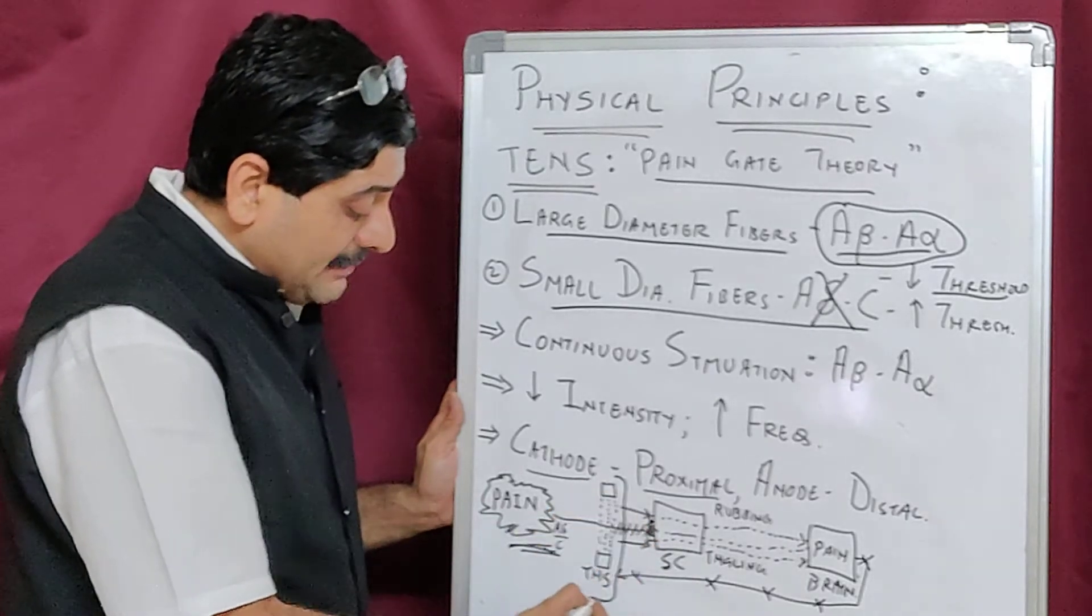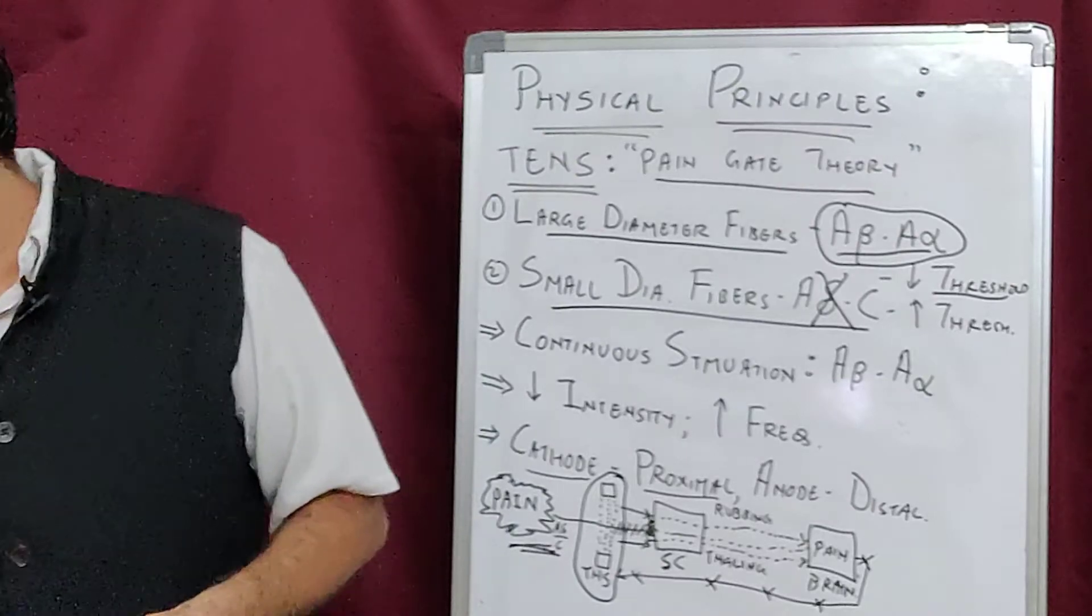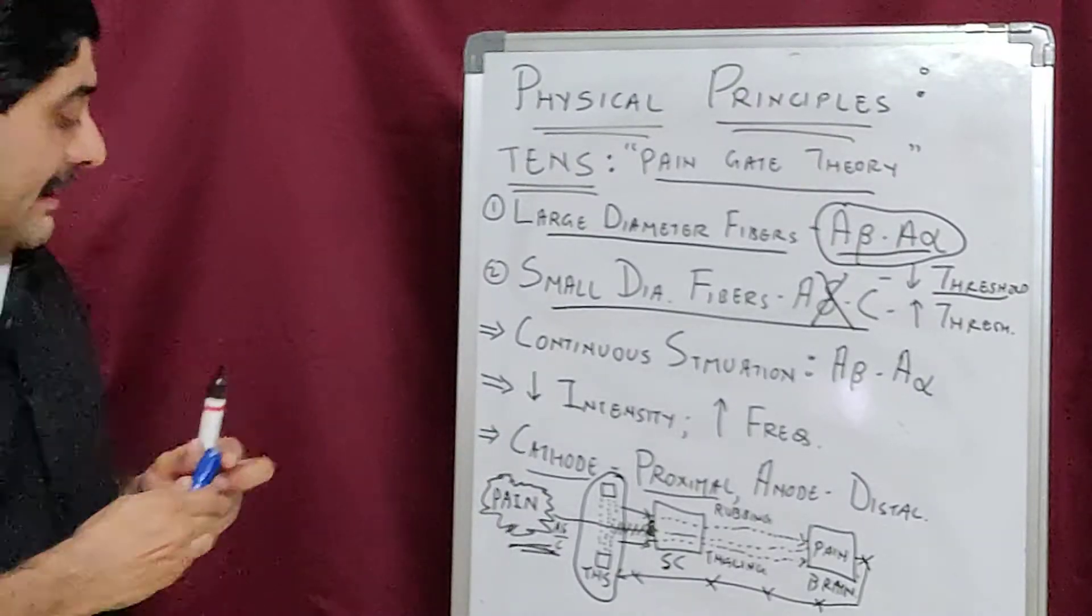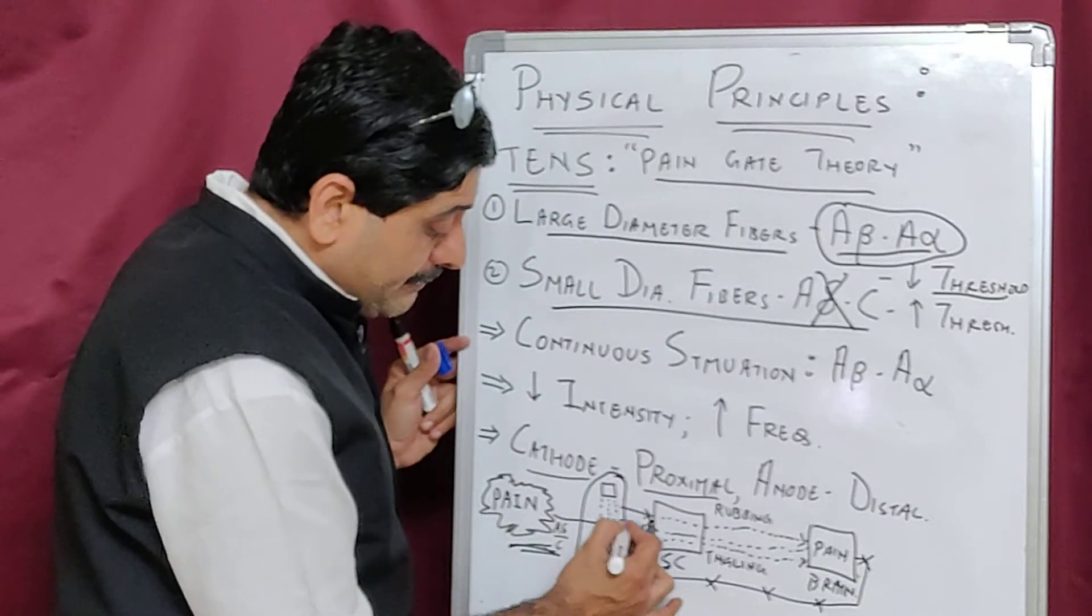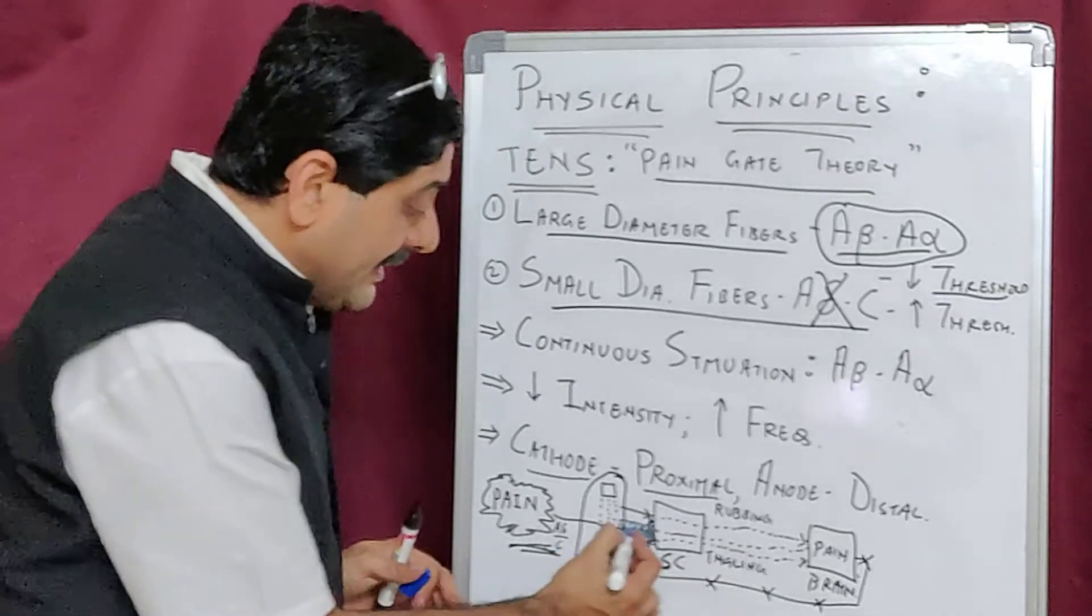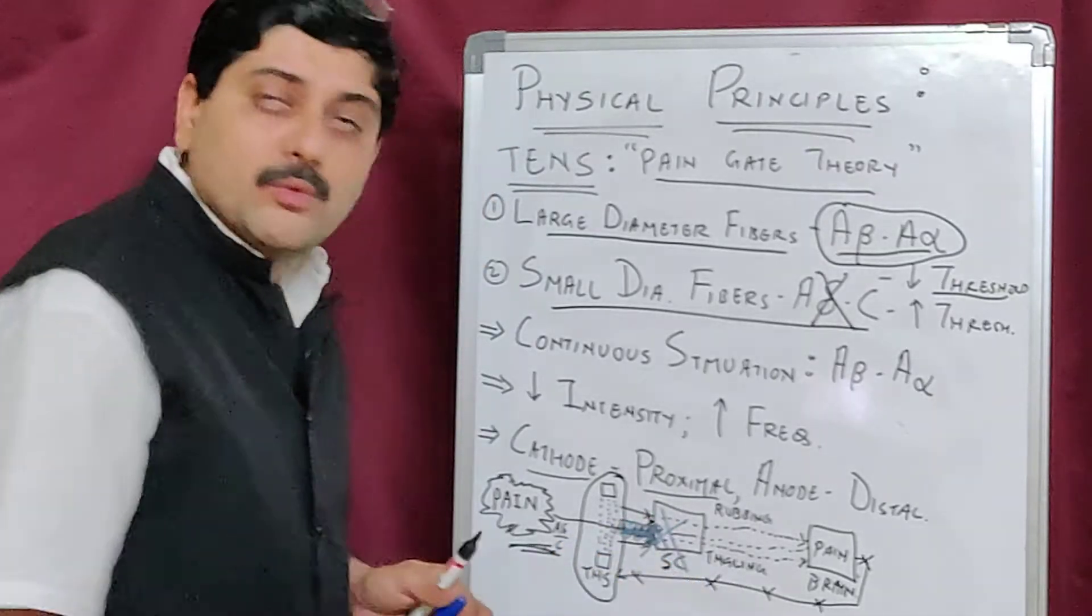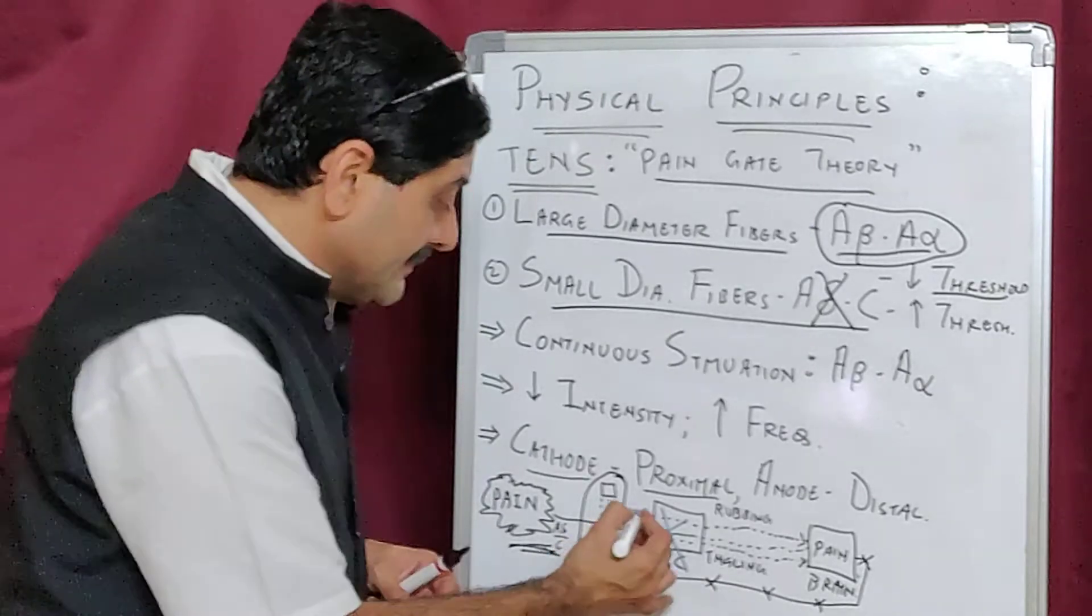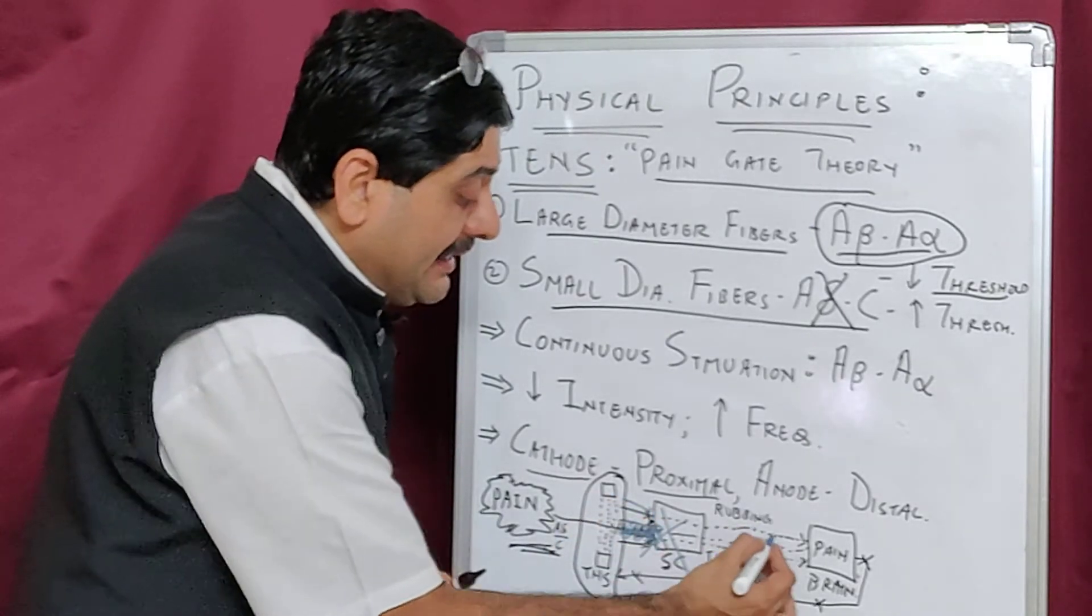Now we are applying TENS in between. When we apply TENS in between, it is disturbing this passage of the pain sensation to the spinal cord. It closes the door here. What is going forward is the sensation from the TENS, which are rubbing and tingling.